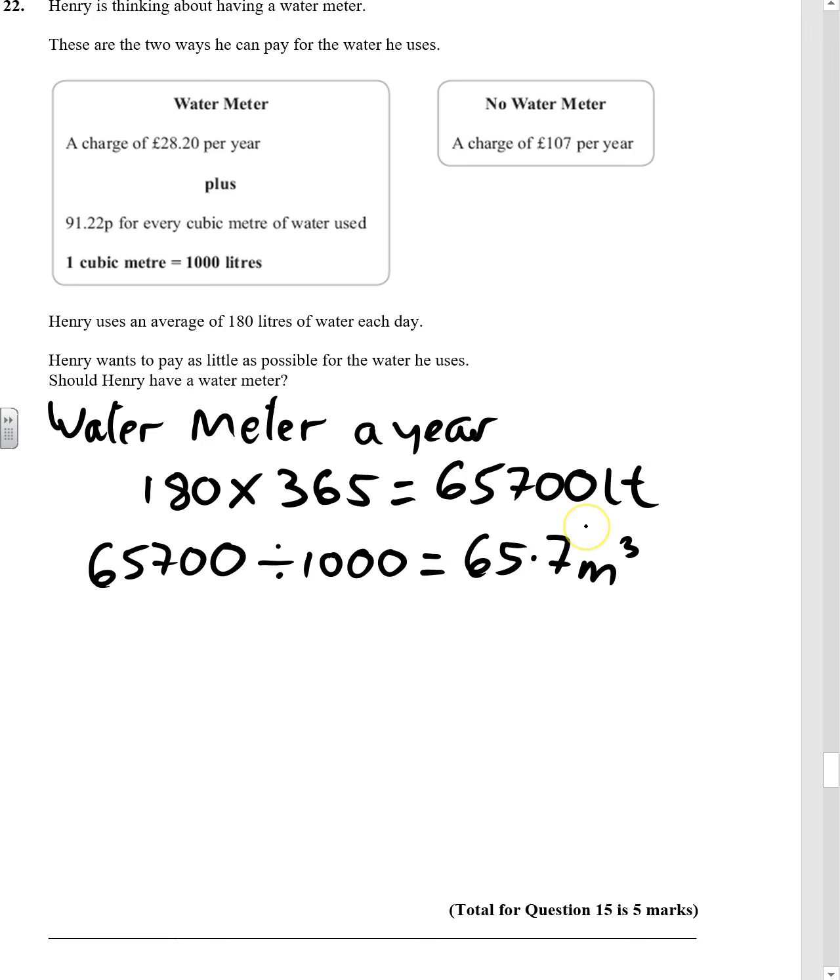Now, somewhere it tells us how much that costs. That's in pence, so let's put that into pounds. So we would have to do 65.7 times by 0.9122. So that's the cost of what he uses, but then we've got the standing charge as well. So we need to add the £28.20.